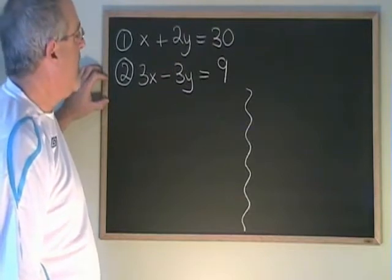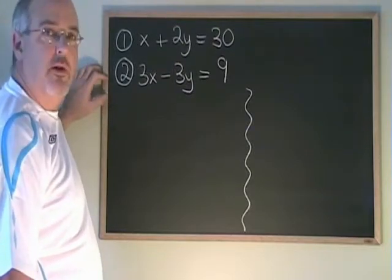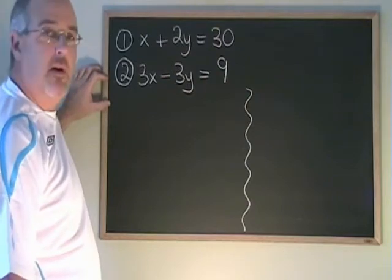Here's the third example. We have x plus 2y equals 30, 3x minus 3y equals 9.